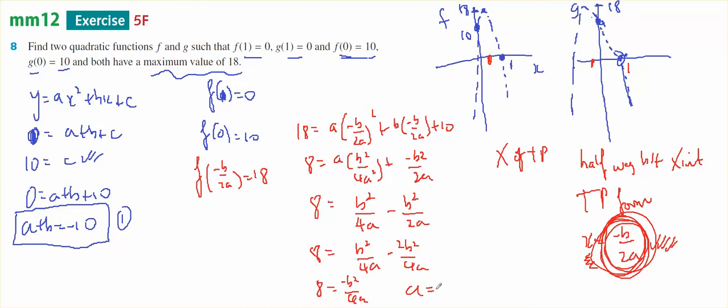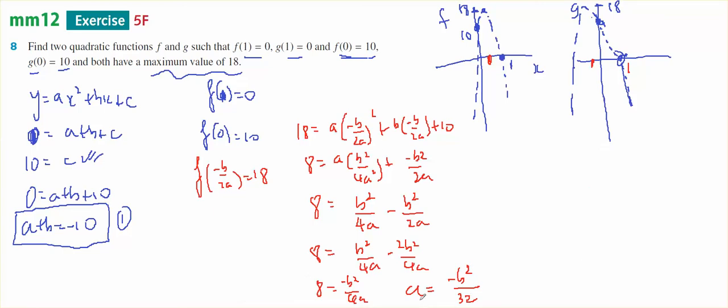So 8 equals minus b squared over 4a. So a equals minus b squared over 32. I have an expression for a. I'm going to sub that into this other equation. So I know that a plus b equals negative 10. Therefore, minus b squared over 32 plus b equals negative 10.